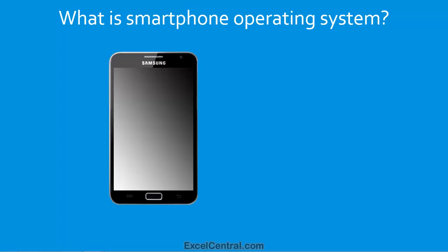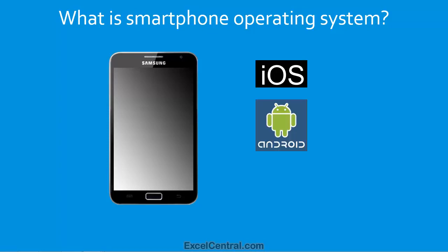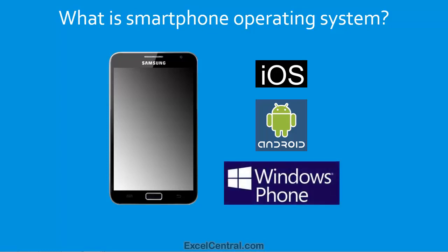There are three common smartphone operating systems: Apple's iOS, which is only used on iPhones; Google's Android, which is used on the majority of other smartphones; and Microsoft's Windows Phone operating system, which is a relative newcomer to the market. Some apps have been released in three different versions, so that a version is available for all three operating systems.